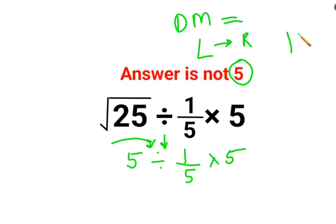5. Now when you have division, you will follow the rule of KCF where K stands for keeping the first number as it is, C stands for changing the division sign to multiplication, and F stands for flipping or taking the reciprocal of 1 upon 5, which is 5 multiplied by 5. So the answer for this question is supposed